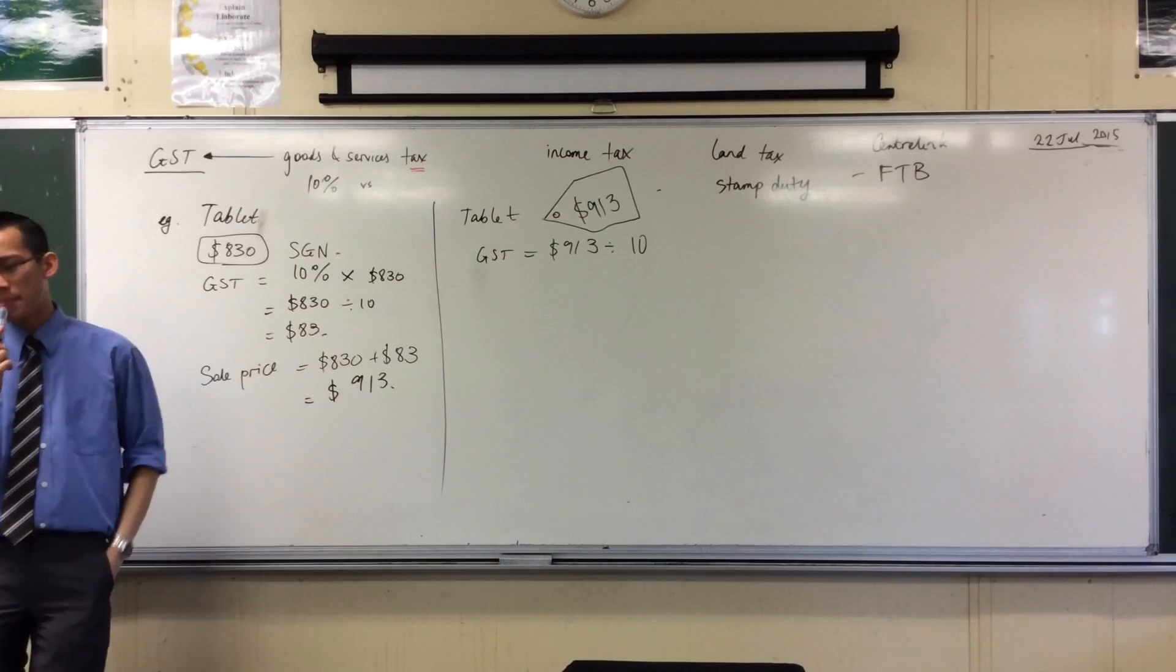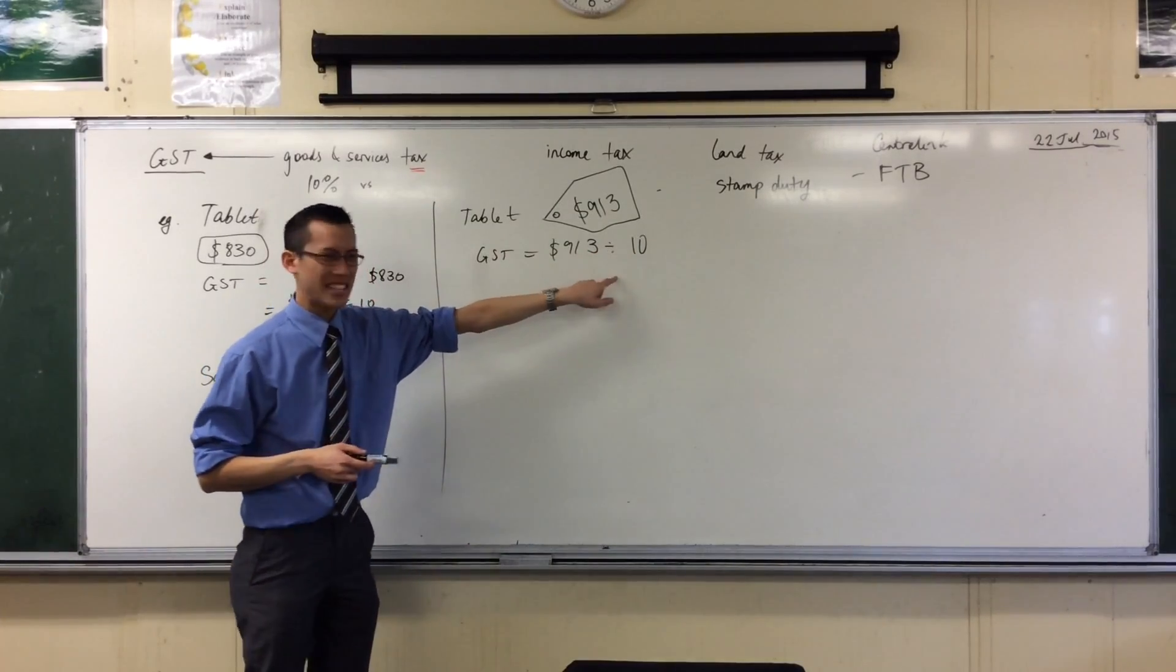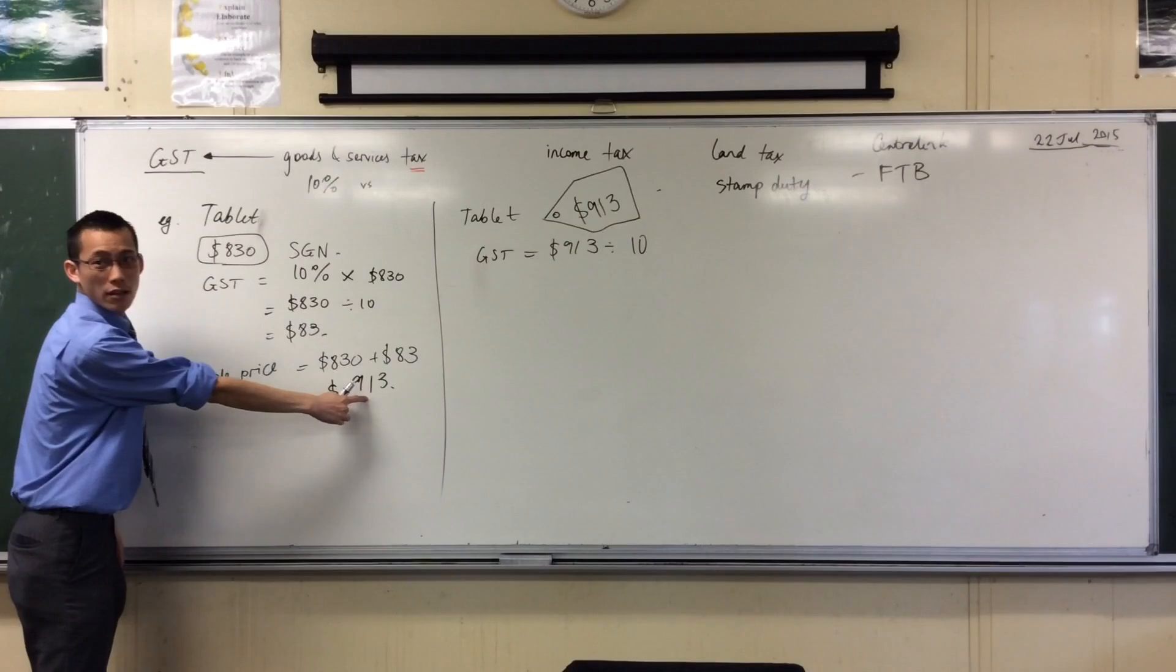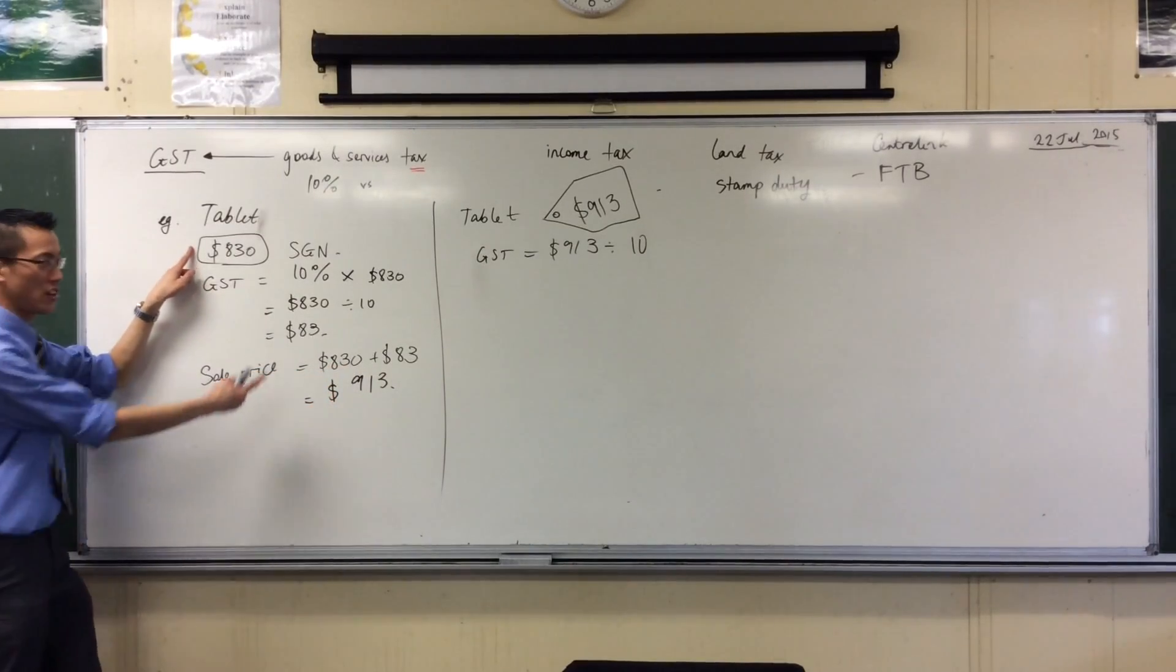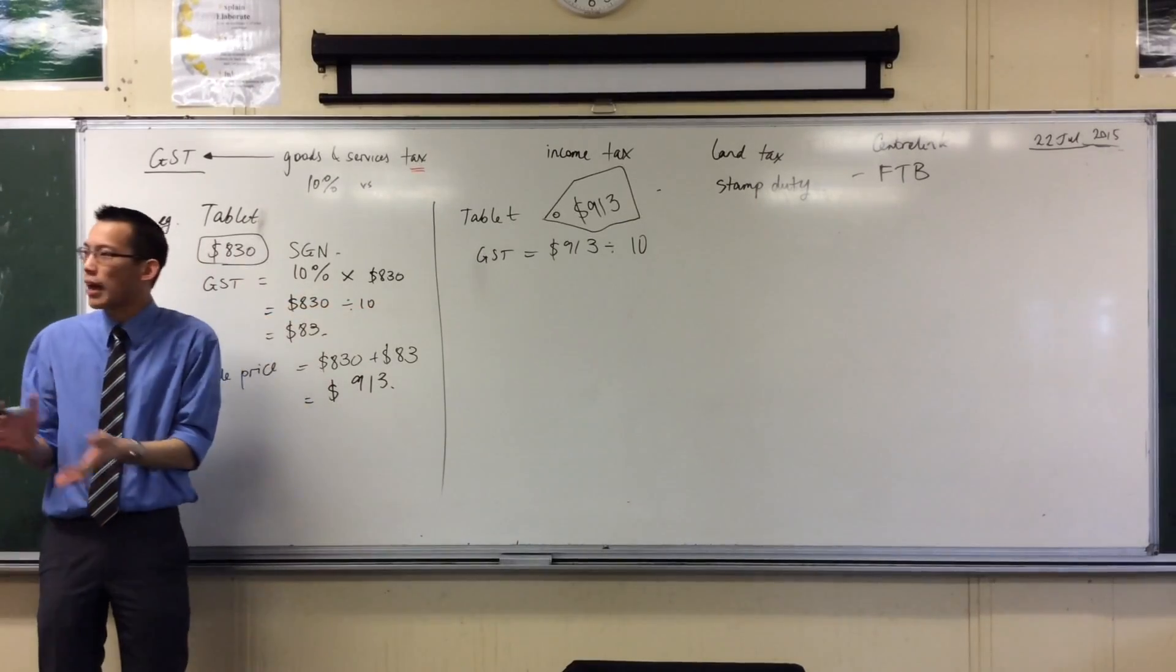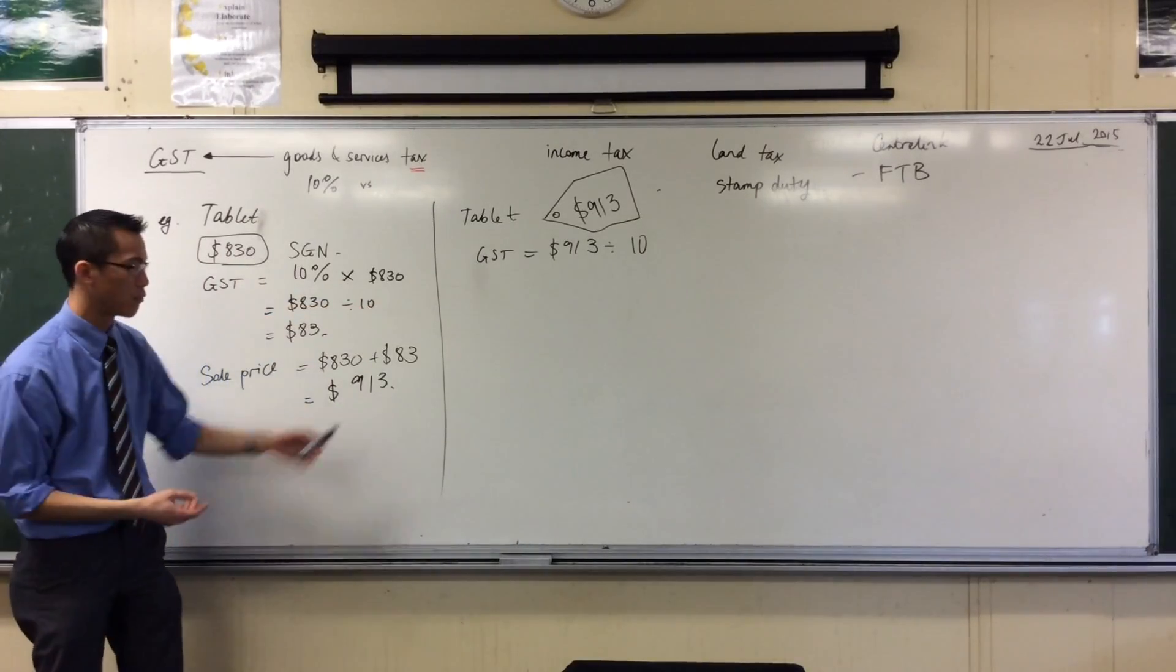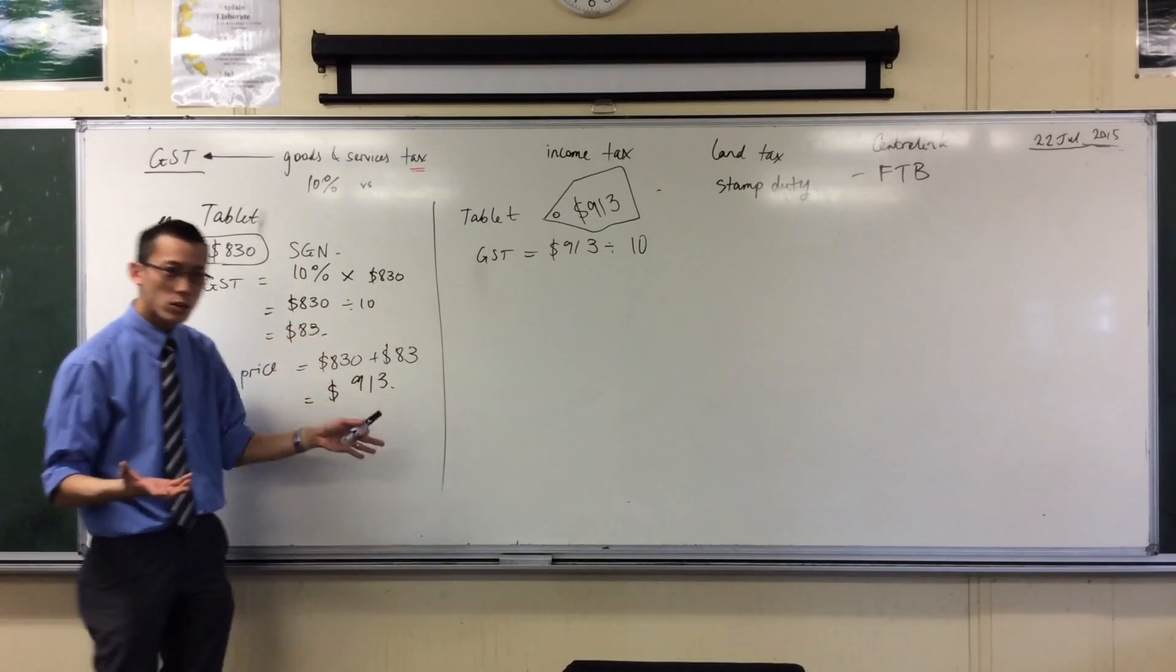But do you remember, what this is going to give us is 10%, but it's going to give us 10% of this amount. It will not give us 10% of this, which is where the GST comes from. Does that make sense? So, even though dividing by 10 seems like a good, intuitive first way to go, it, in fact, will not give us the $83 we were after. So, it's a good shot, but what else could we try?